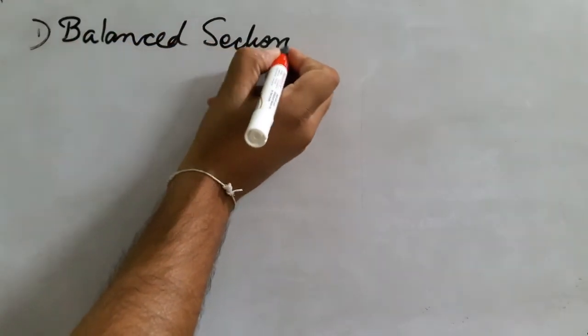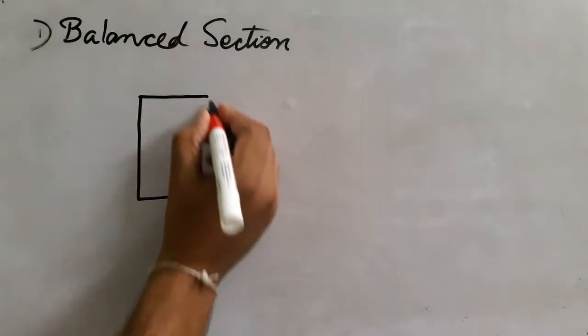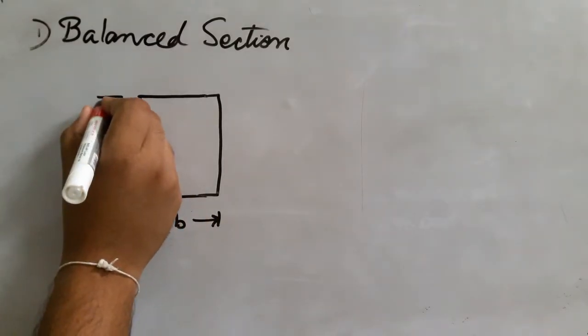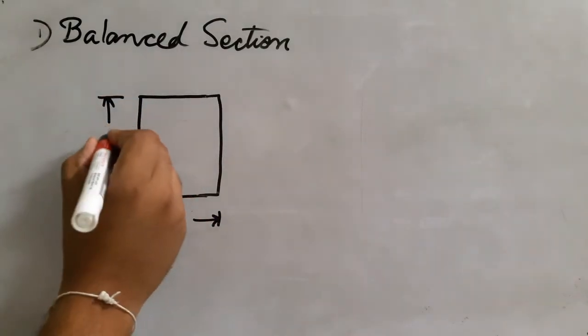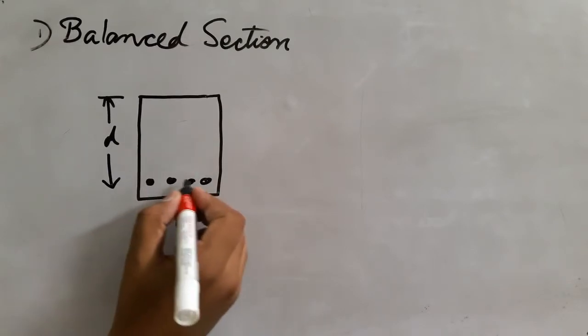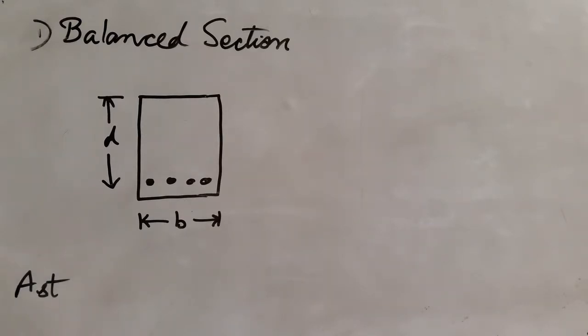In a balanced section, if we take a concrete section — I am going to take a concrete section with width small b and depth small d. This is the concrete section with small b and depth small d. It means that the overall depth is not separately indicated. This is the area of steel, and this is the neutral axis.